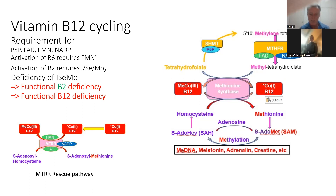In functional B2 deficiency, you rapidly generate inactive B12 — so you now have functional B12 deficiency. This is different from classical B12 deficiency due to lack of dietary intake. In this instance, you can have plenty of B12, but it's basically inactive and not doing what it's supposed to do: be involved in the methylation cycle.